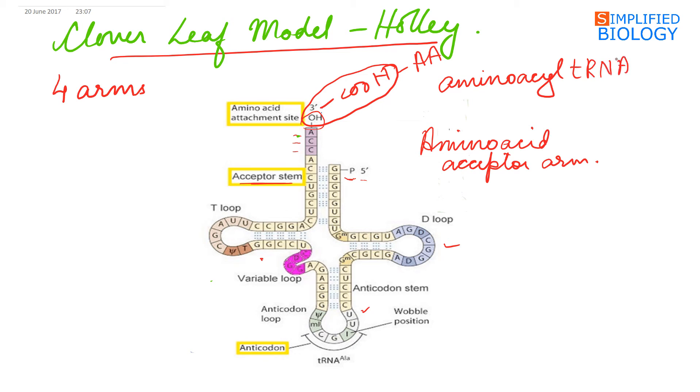The arm opposite to it is the anticodon arm or the anticodon loop, as it has a three base sequence called the anticodon in its unpaired loop, by the help of which it recognizes the codon for its specific amino acid on the messenger RNA.